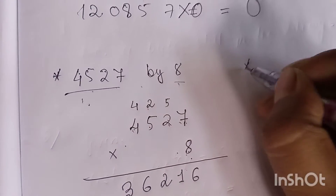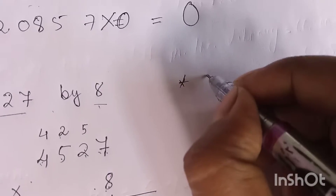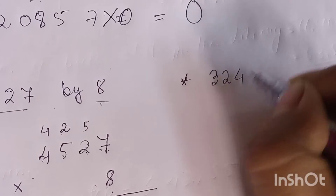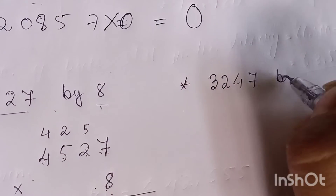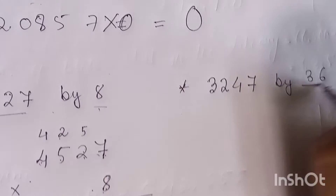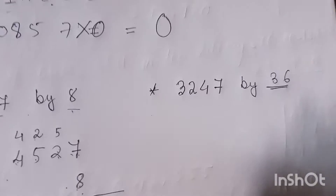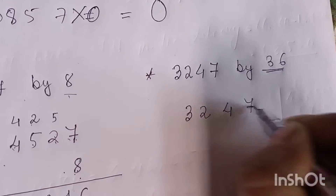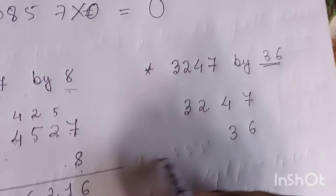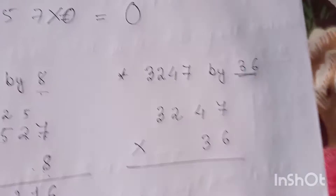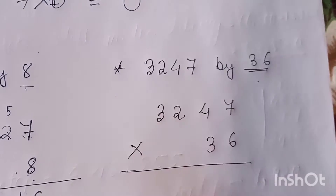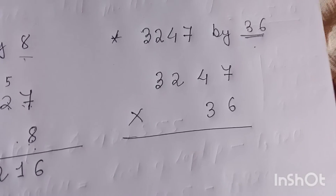Now you are going to learn how to multiply a big number by a two-digit number. We have the number three thousand two hundred forty-seven and we are going to multiply it by 36, a two-digit number. First, put the numbers in a column.